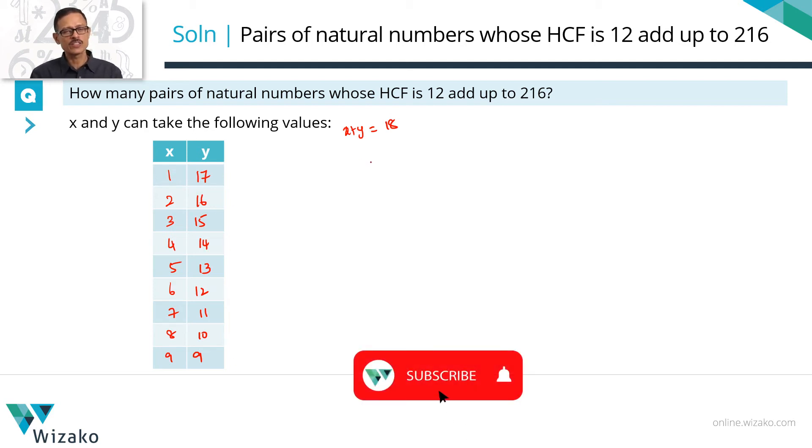We have listed down all possible values of x and y which are positive integers that will add up to 18. Next up, let's find out in how many of these cases is the HCF 1.